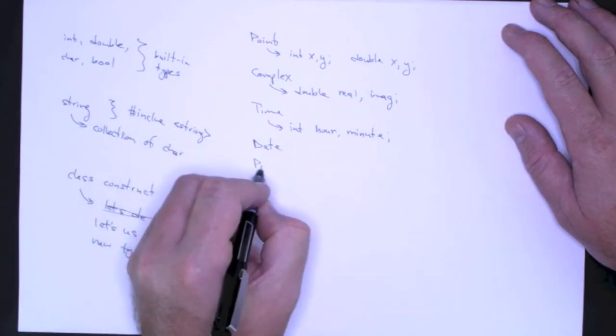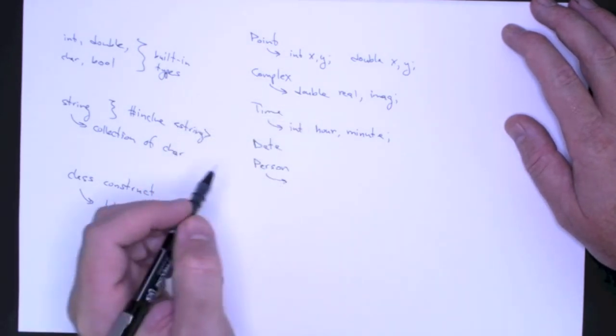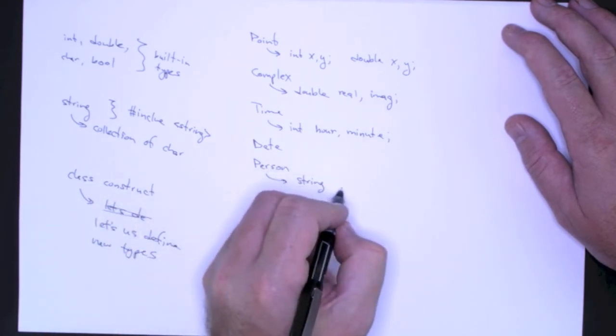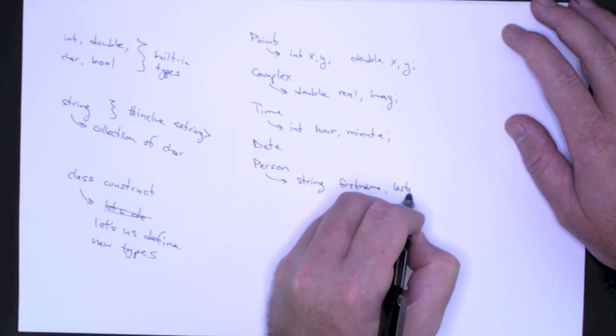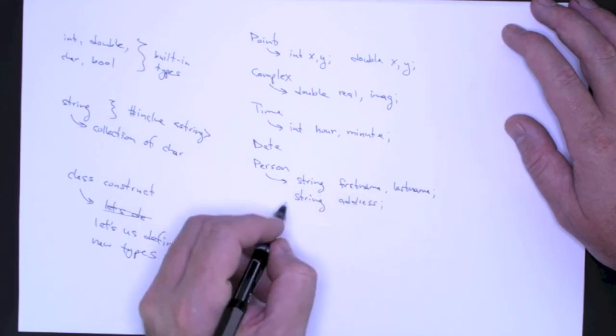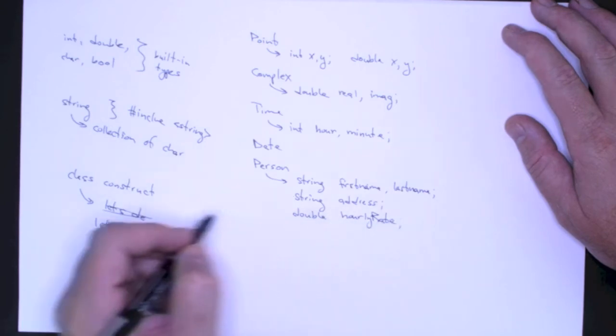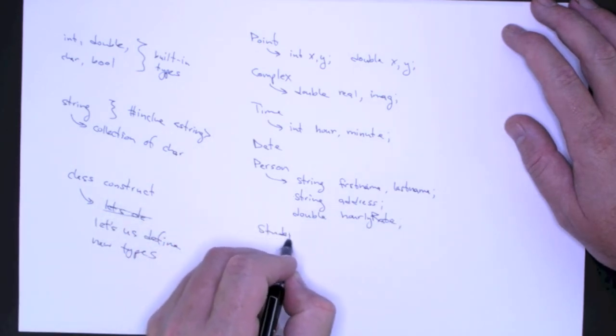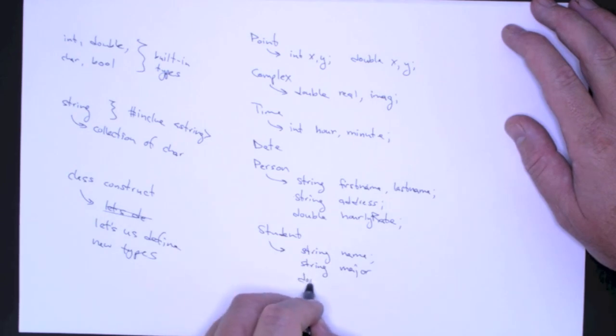Then, when we get into situations where we want to represent information about people, the definitions or the design becomes a little bit more complicated. Now, I'm going to need a string to represent their first name and their last name. Maybe I also need a string for their address. I could use a double for their hourly rate. If we talk about a student, then again, I could use a string for their name, I could use a string for their major, I could use a double for their GPA. And so on and so forth.